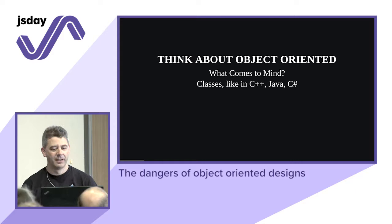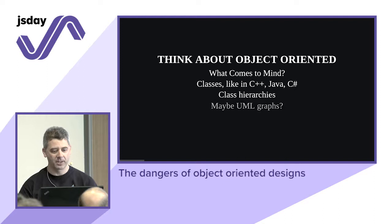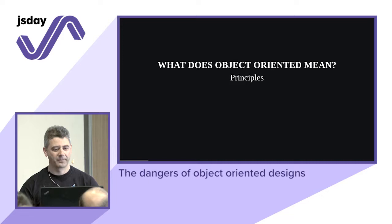When you think about object-oriented, what comes to mind? Mostly classes — that is the hallmark of object orientation, like in C++, Java, and C#, the most mainstream languages. You have class hierarchies, and when first taught OOP, there's this taxonomy of objects, UML graphs, design and architectural patterns. But what does object-oriented really mean?